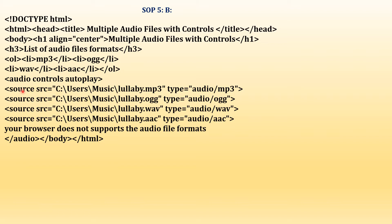We have used the source tag with the SRC attribute. The first source is the MP3 file — same file with a different extension for OGG, WAV, and AAC. The type is audio/mp3, audio/ogg, audio/wav, and audio/aac respectively. They also said to give information if a format is not supported, so inside the audio container tag I've given the message: 'Your browser does not support the audio file formats.'